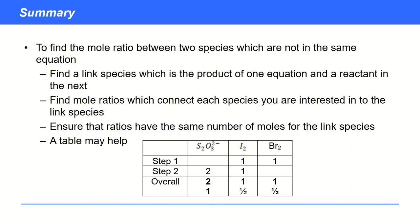To summarize: to find the mole ratio between two species not in the same equation, find link species — the product of one reaction and a reactant in the next. There may be several link species in a three, four, or multi-step process. Find mole ratios connecting each species of interest to the link species, then ensure both ratios have the same number of moles of the link species. A table helps: write the numbers from each column down at the bottom to get the overall ratio. This works as long as the number of moles for the link species is equal across steps.